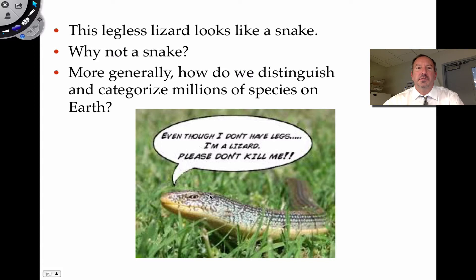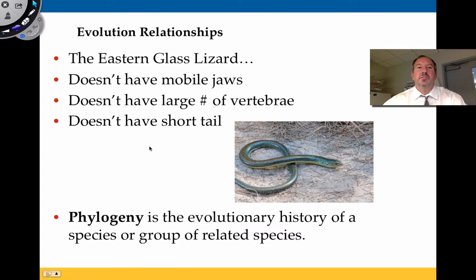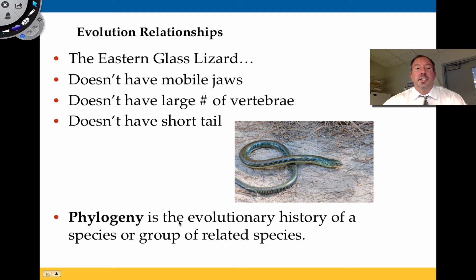This eastern glass lizard — why isn't it a snake? It doesn't have mobile jaws. It doesn't have a large number of vertebrae. It doesn't have a short tail just outside of its anus, which are all shared characteristics that snakes have. So it's not considered to be a snake.